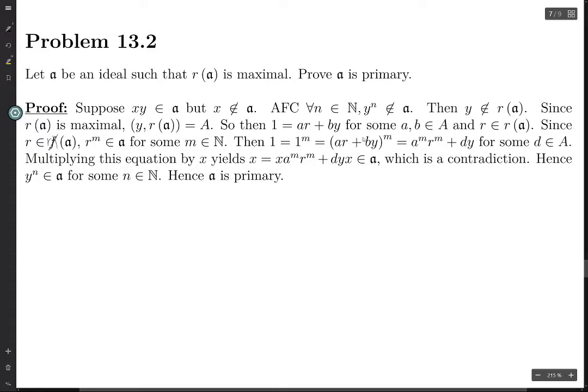if you write this product out and you take AR from every single factor, then the corresponding term in the sum will be A to the M times R to the M.